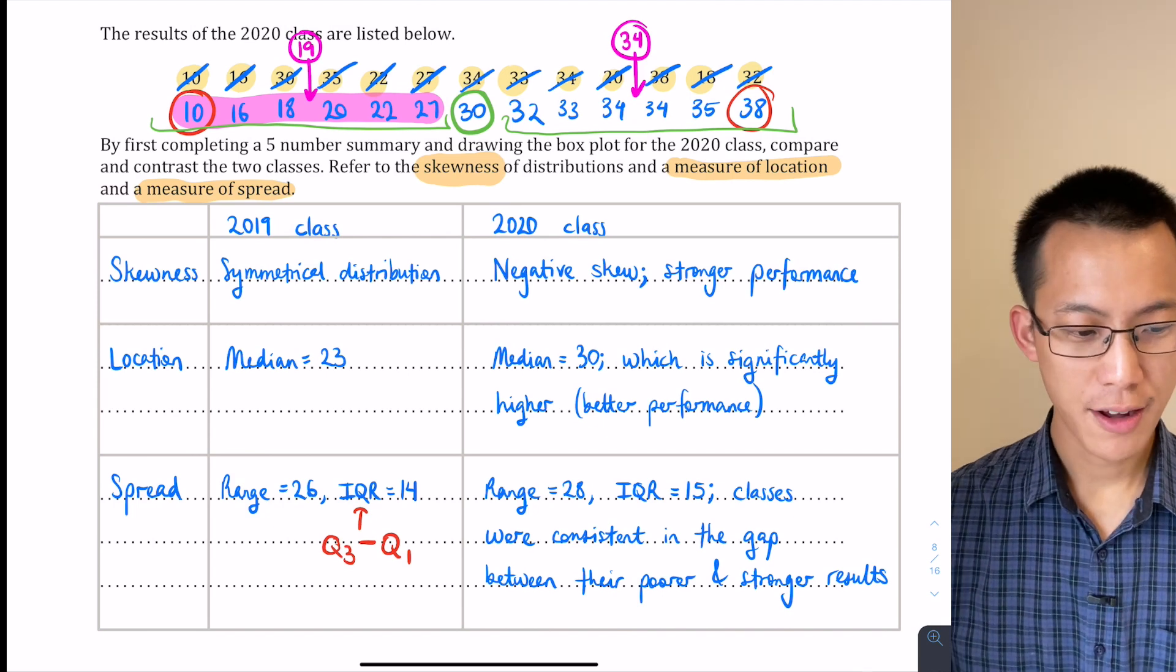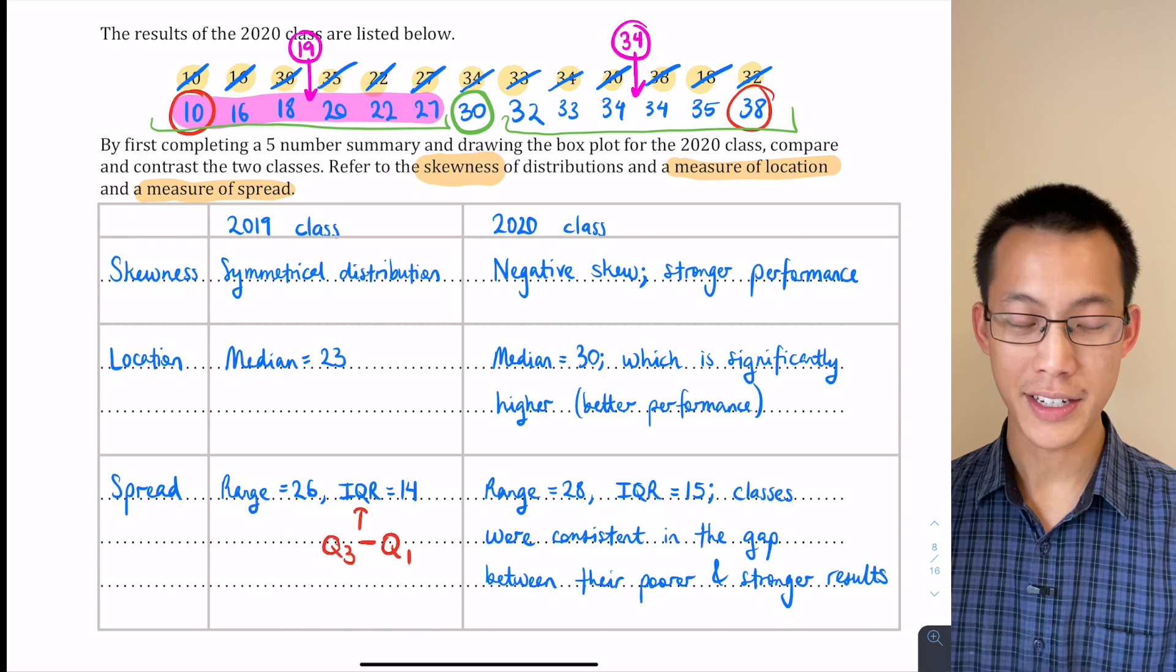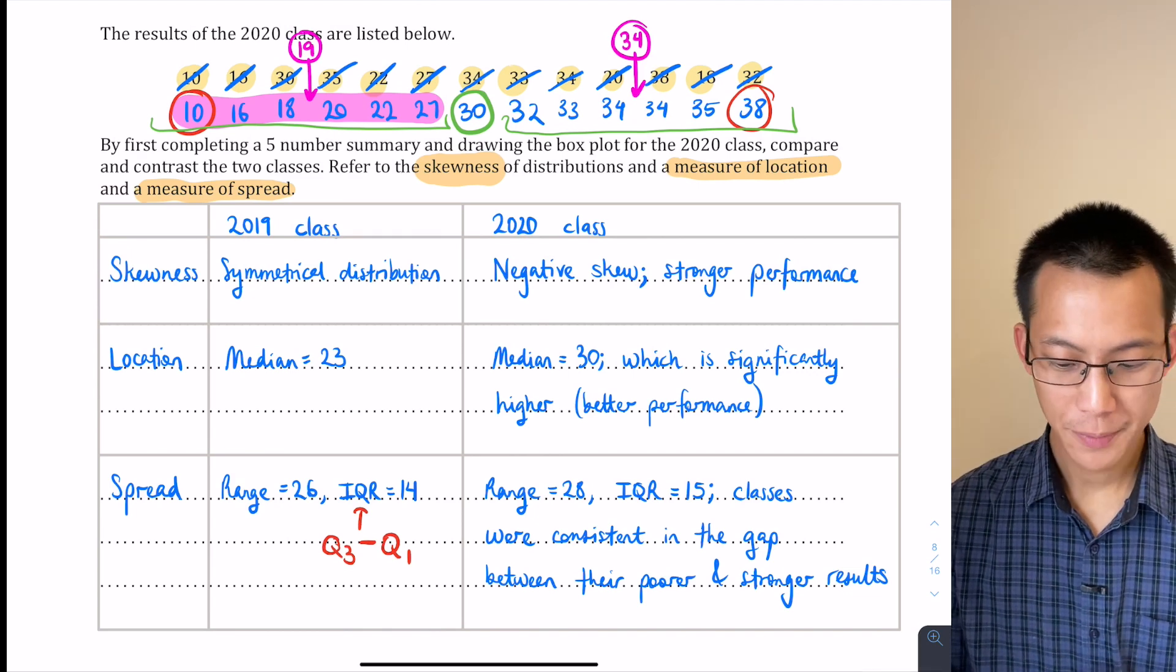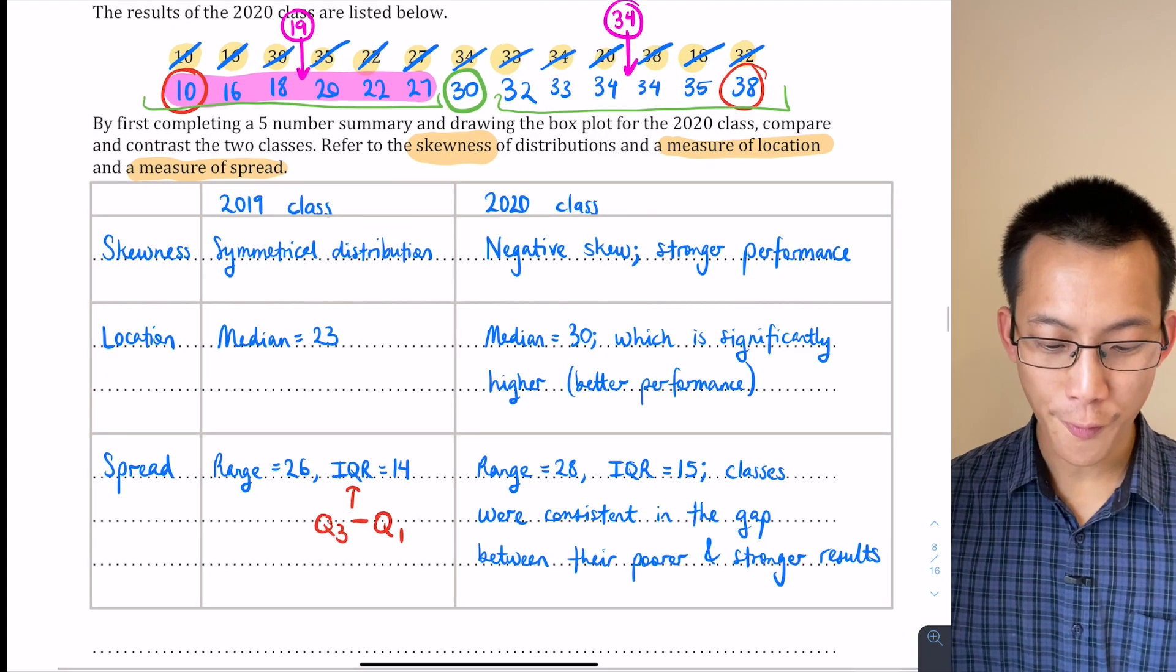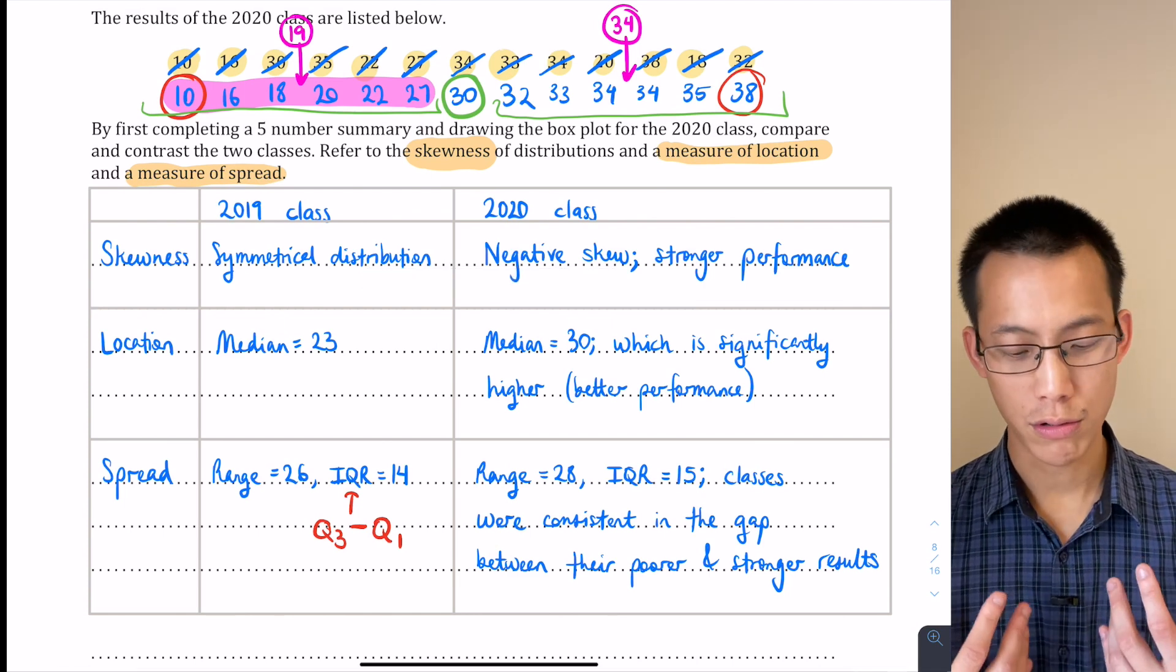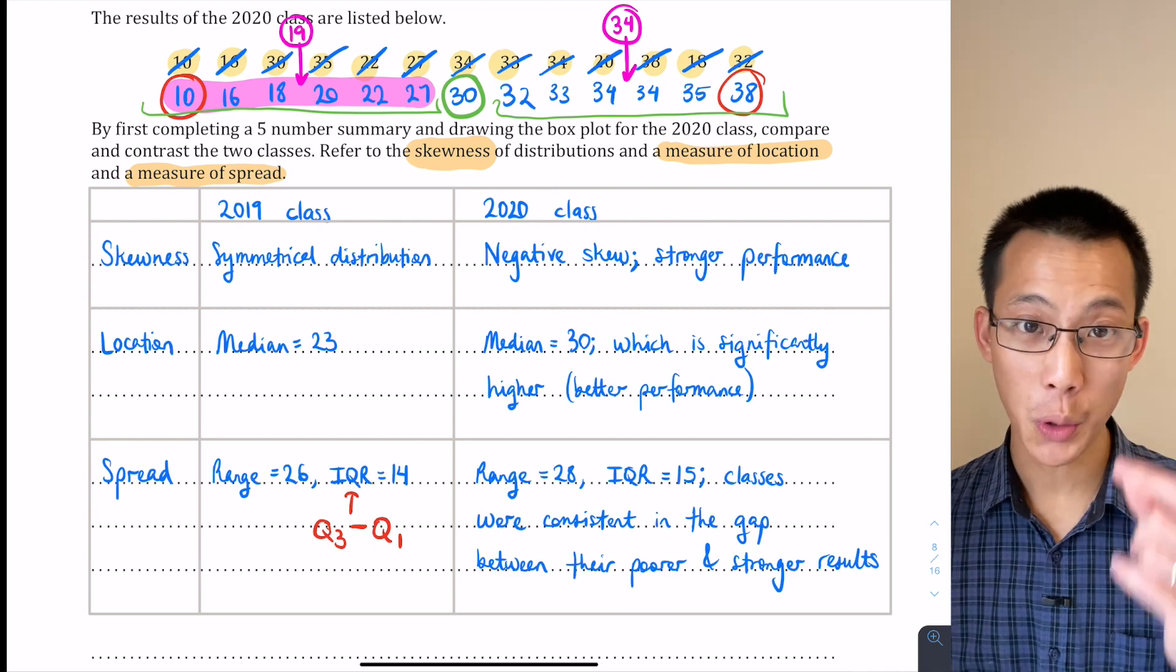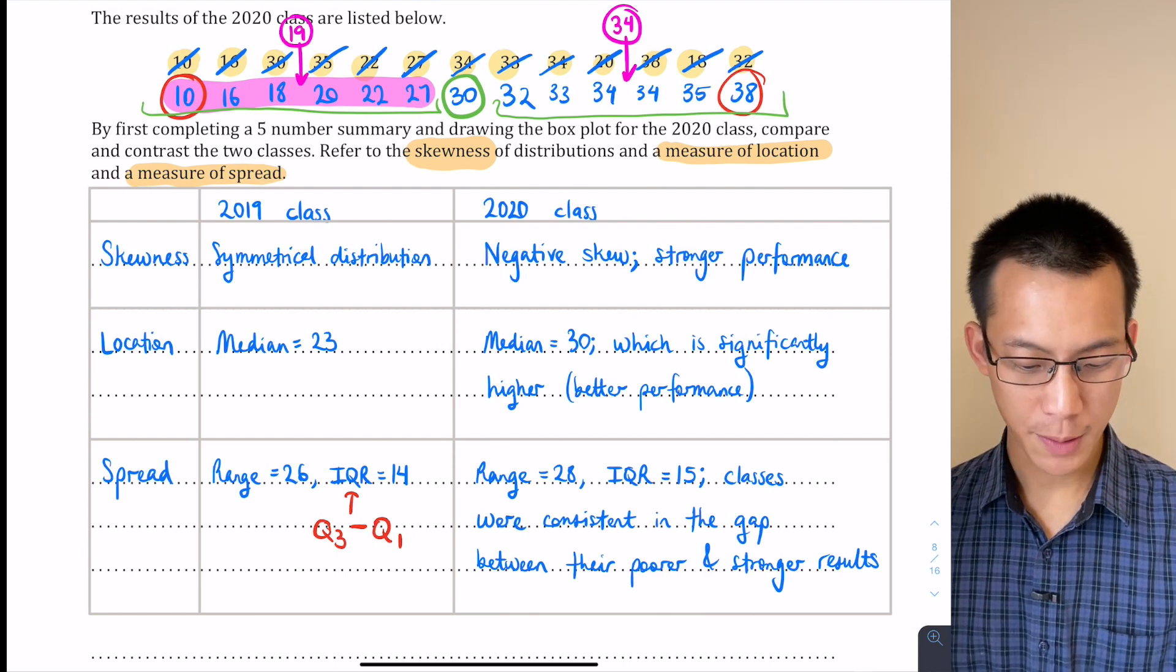So I guess from skewness and a location point of view, they're quite different, but from a spread point of view, they are quite similar. Now you can see I've laid out my solution in this kind of table form. You could have written it in sentences or even in dot points. The real key is, was your logic and the data points you referred to clear? Could we know what you were talking about on the basis of what you had written in that space there?